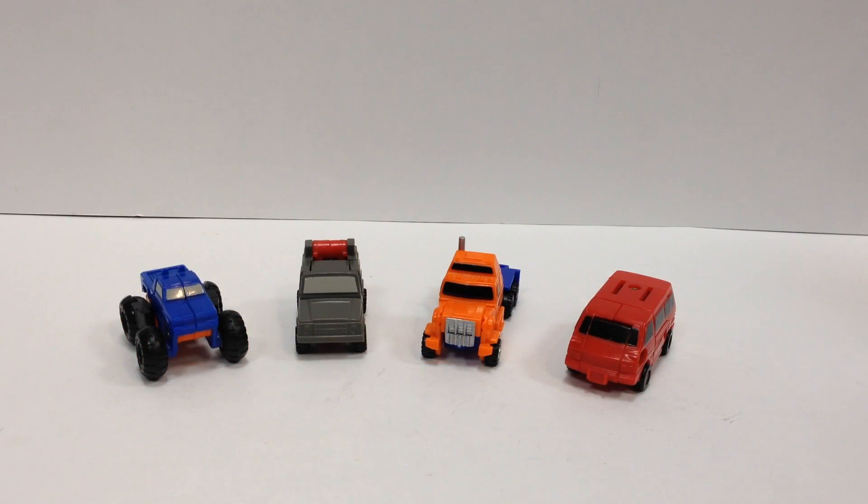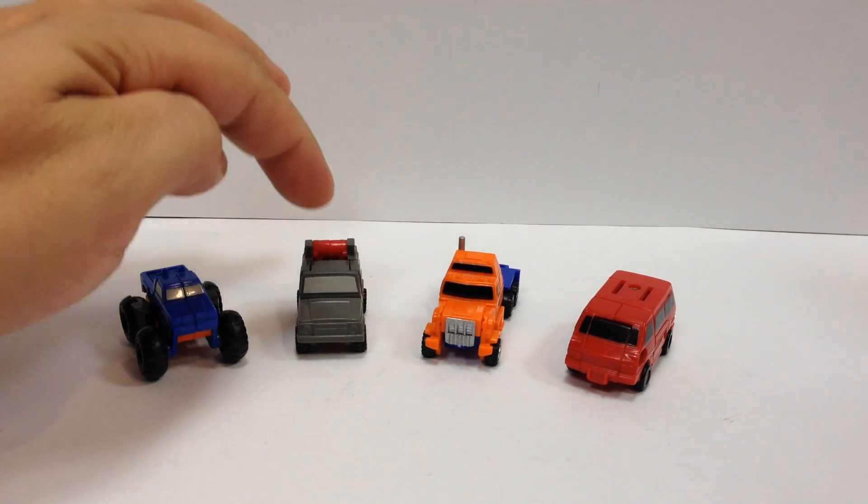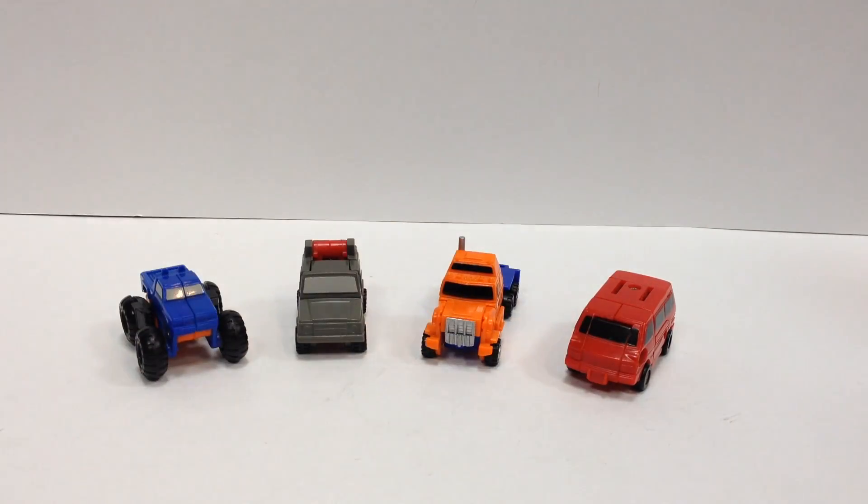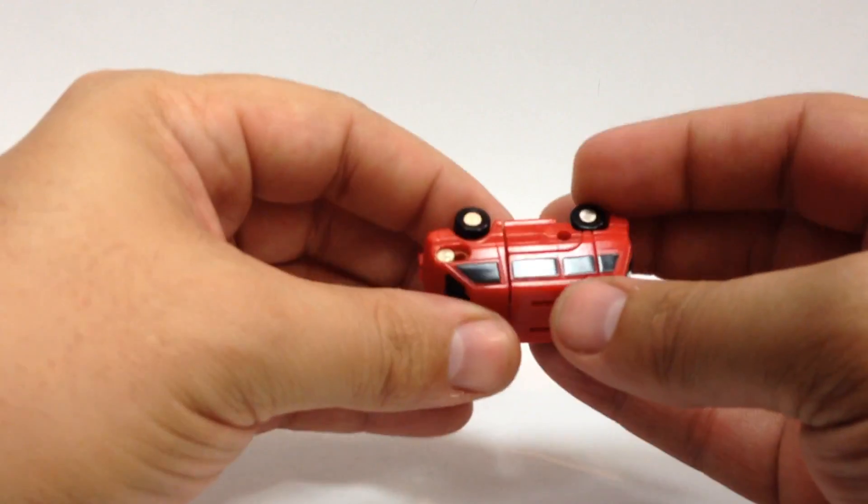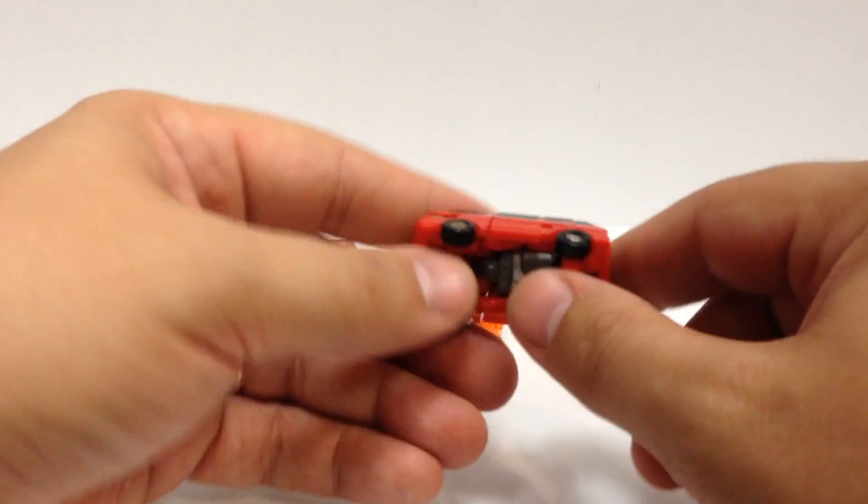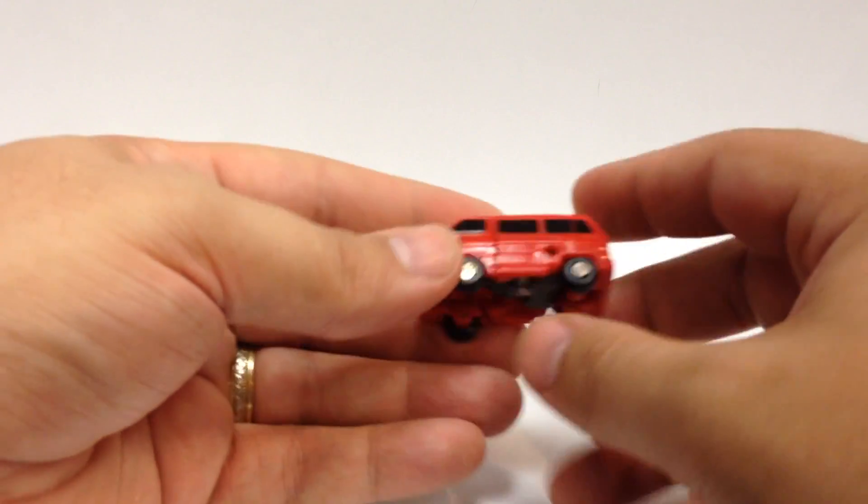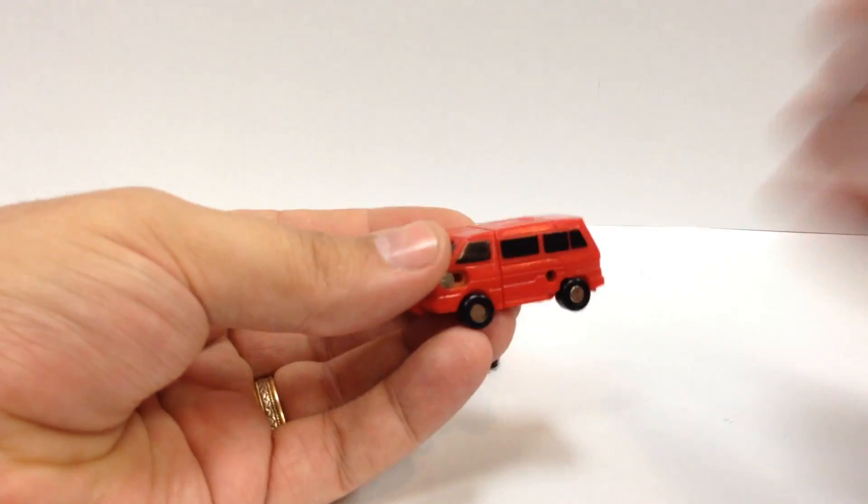Alright, picked these guys up at Steel City Con. This is the Micro Master Autobot Off-Road Patrol. You've got Mudslinger, High Jump, Powertrain, and Tote. He is not a baby Iron Hide. They're not quite Micro Machine size, they're a little bigger than Micro Machines, but they're small little mini Transformers that came out near the end of the G1 line.